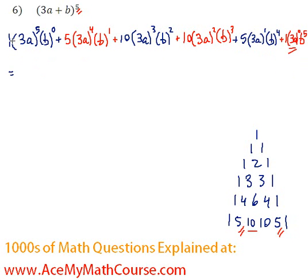For the first term, 1 times 3a to the 5, 3 to the 5 is 243, and a to the 5 is just a to the 5. b to the 0 is 1, so 1 times 1 times 243 a to the 5 is just this.